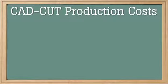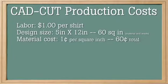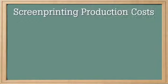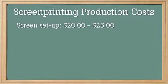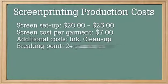How much does it cost to make these three shirts? I have about a dollar in labor per shirt — it took me five minutes to complete three shirts. The design is five inches by twelve inches, so I have sixty square inches of material and waste. At about a penny per square inch landed cost, that's about sixty cents in material costs per garment — so about a dollar sixty total per garment for labor and materials, roughly two dollars with overhead. If you screen print these three shirts, it's going to cost twenty to twenty-five dollars just to set up the screen, which amortizes to about seven dollars per garment — not to mention ink and cleanup.